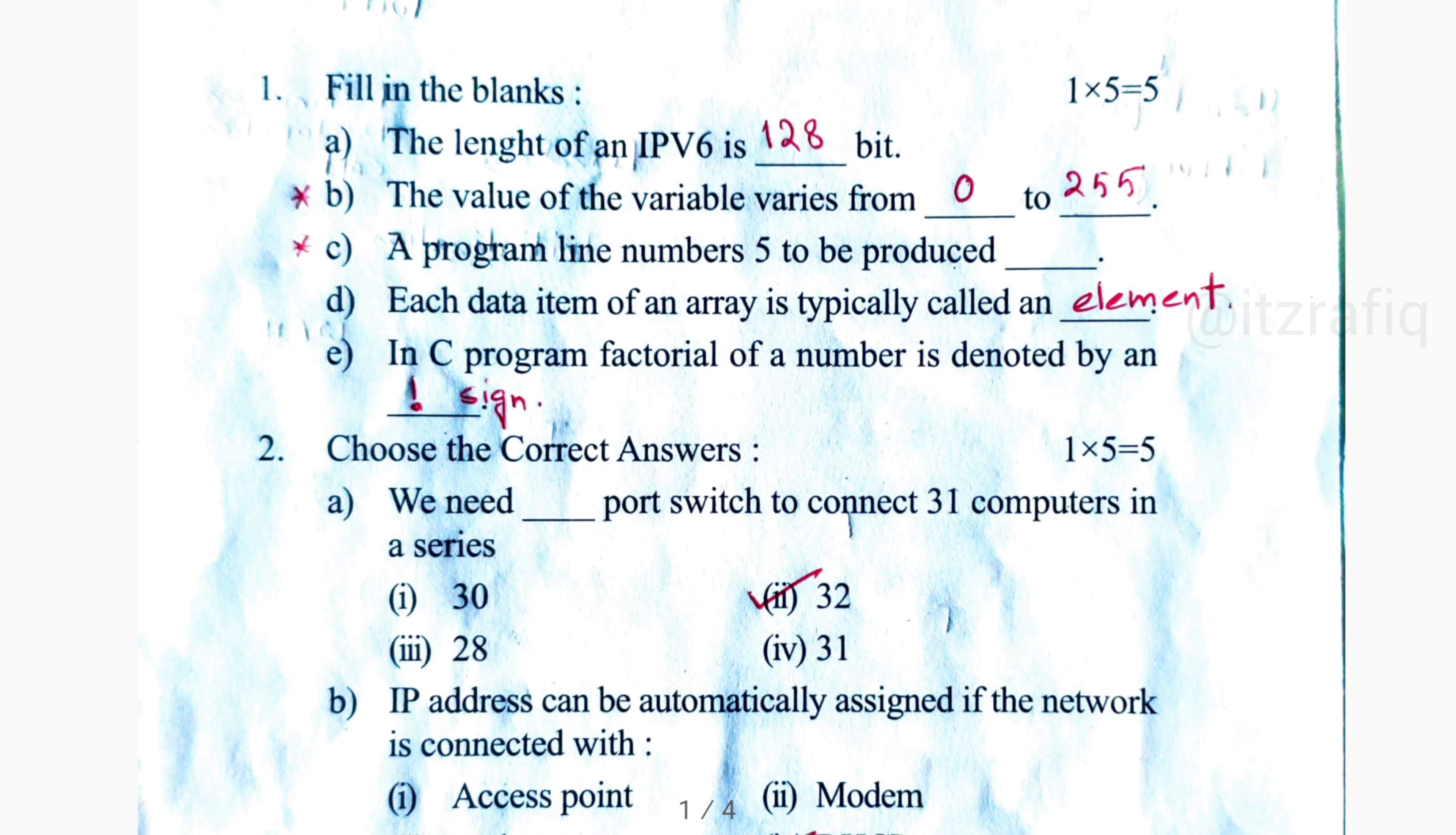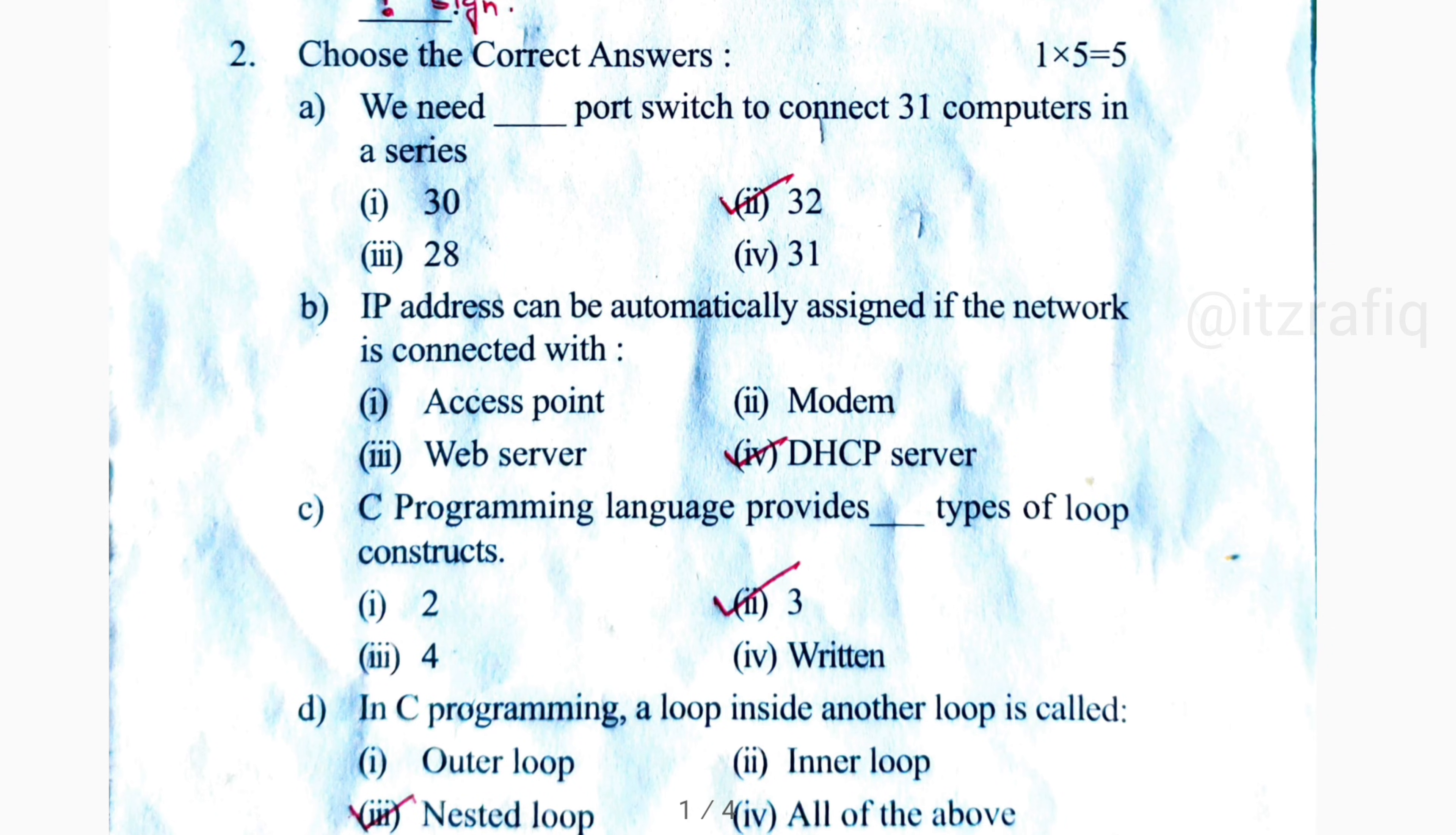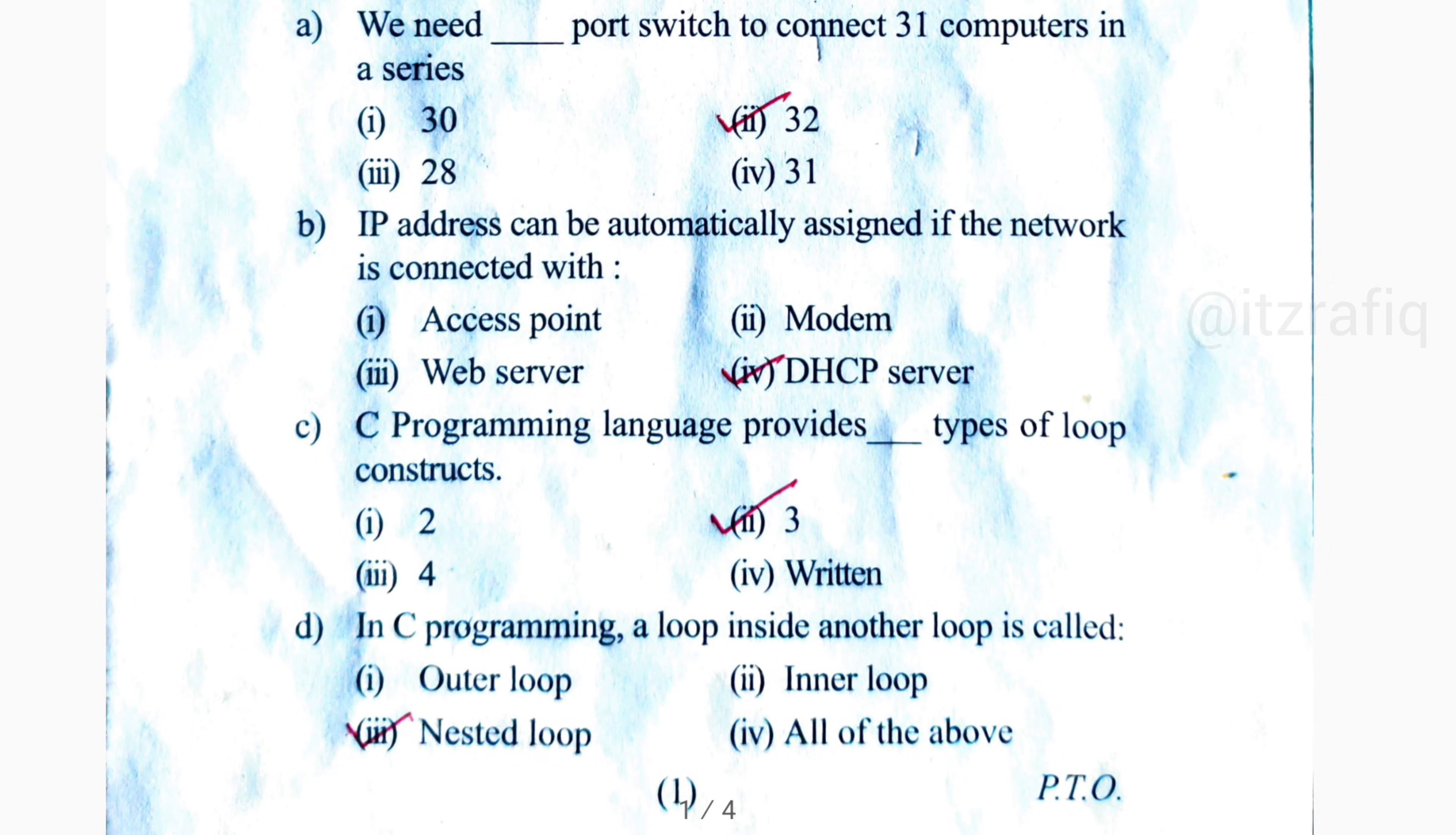Fill in the blanks - sorry, MCQ. The first question will be 32, because whenever you are going to buy a switch, you have to buy either 8 ports, 16 ports, or 32 ports. You will not get 31, 30, or 28, so the correct answer is 32.